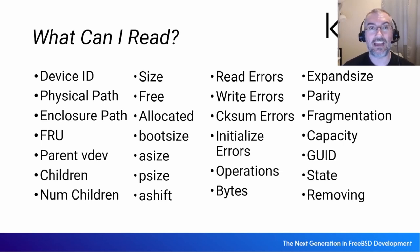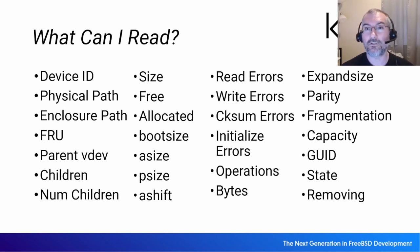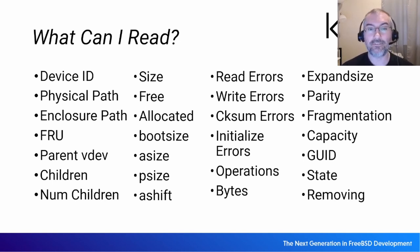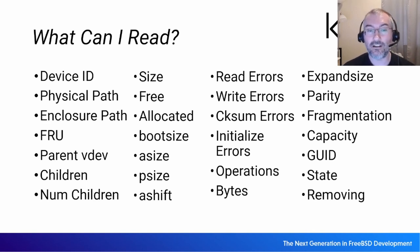The expand size tells you how much space ZFS could grow a VDEV if you replaced it with a larger disk, using 'zpool online -e' or the auto-expand property. The parity property, when you get properties of a RAID-Z VDEV, tells you its depth — RAID-Z1, 2, or 3. You can see fragmentation, how much space it has, and its GUID — every VDEV has a unique GUID including leaf disks. You can see the state of a VDEV: online, offline, degraded, replacing, etc. And lastly there's a 'removing' property that will be on if that device is currently being evacuated from the pool.